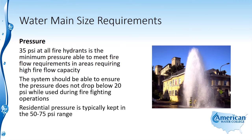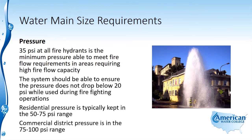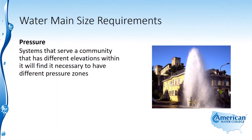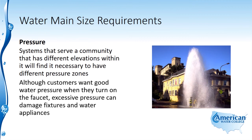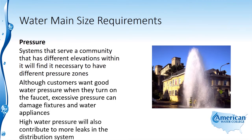Residential pressure is typically kept in the 50 to 75 PSI range, while commercial district pressure is in the 75 to 100 PSI range. Systems that serve a community with different elevations will find it necessary to have different pressure zones. Although customers want good water pressure, excessive pressure can damage fixtures and water appliances, and will also contribute to more leaks in the distribution system.